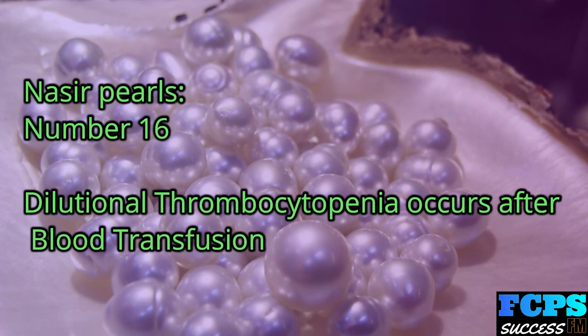Nasir Pearl number 16: Dilutional thrombocytopenia occurs after blood transfusion.